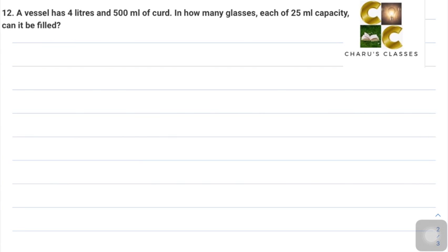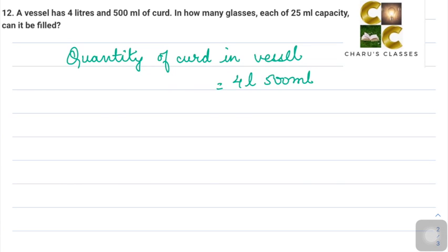This vessel has 4 liters and 500 ml of curd. So quantity of curd in vessel, that is 4 liters 500 ml. We can convert 4 liters into milliliters by multiplying by 1000, so this is 4000 plus 500 ml, that is 4500 ml.